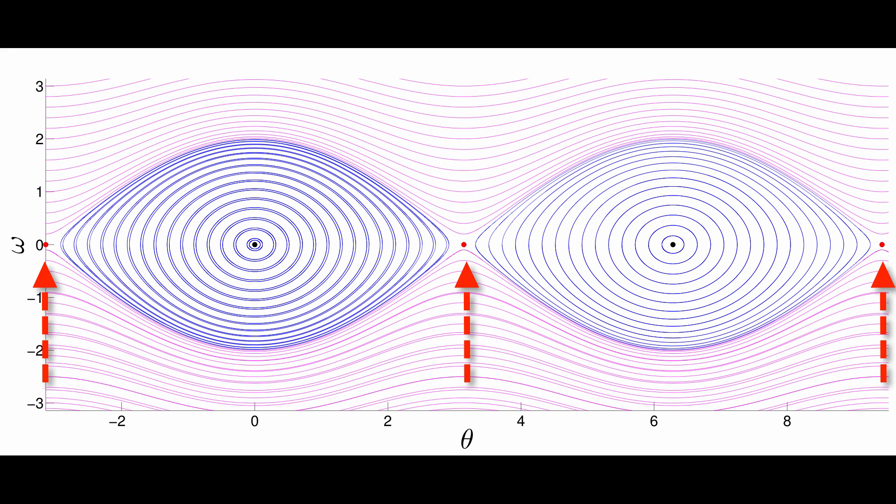This means that the fixed points with odd multiples of pi for theta and zero for omega are hyperbolic fixed points. Remember, this discussion is somewhat outside of the scope of this course, and is intended for experts. Now let's get back to the quiz.